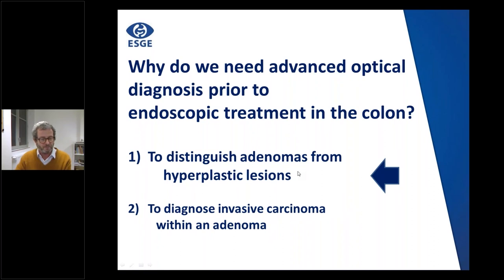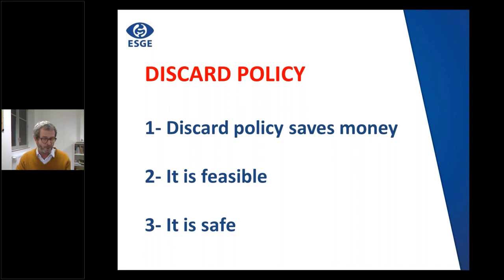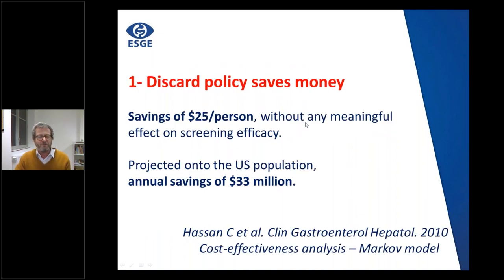To distinguish adenomas from hyperplastic lesions is the basis of what we call the discard policy. Discard means you resect the polyp but don't send it to the pathologist for analysis. This policy is promoted for three reasons: it saves money, it is feasible, and it is safe. There is a nice cost-effectiveness analysis by Cesare Hassan demonstrating that in the USA you can save $25 per person without any meaningful effect on screening efficacy — totaling $33 million at the population level.